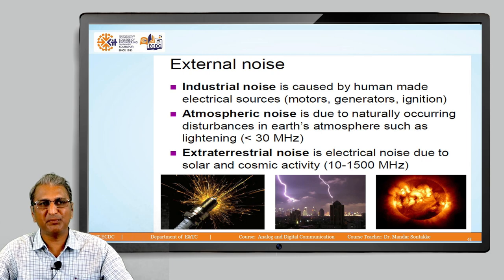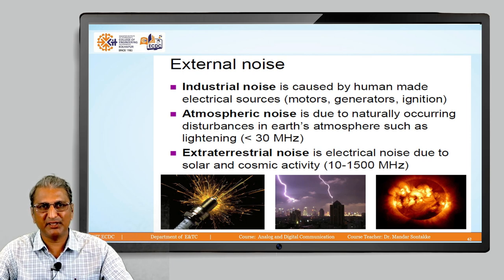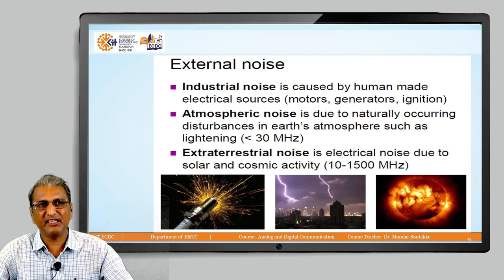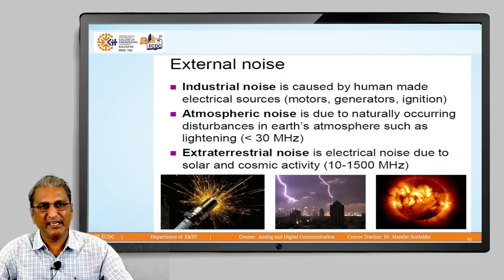The second type is atmospheric noise. It is due to naturally occurring disturbances in Earth's atmosphere such as lightning. The frequency range is less than 30 megahertz. Natural disasters such as volcanoes and other calamities can also produce atmospheric noise, which degrades the performance of our system.